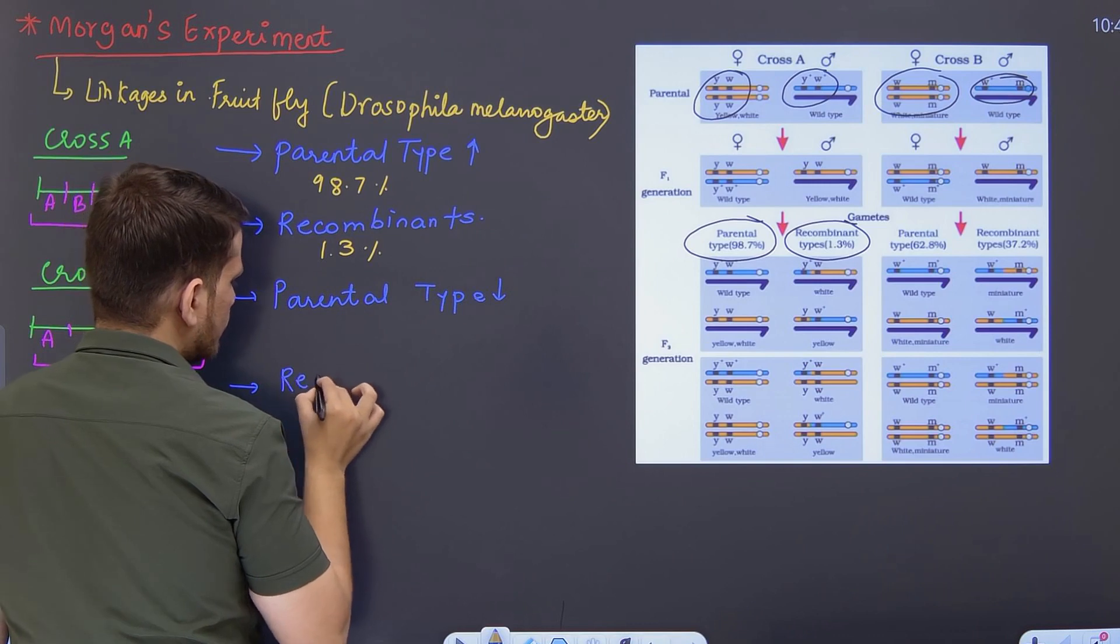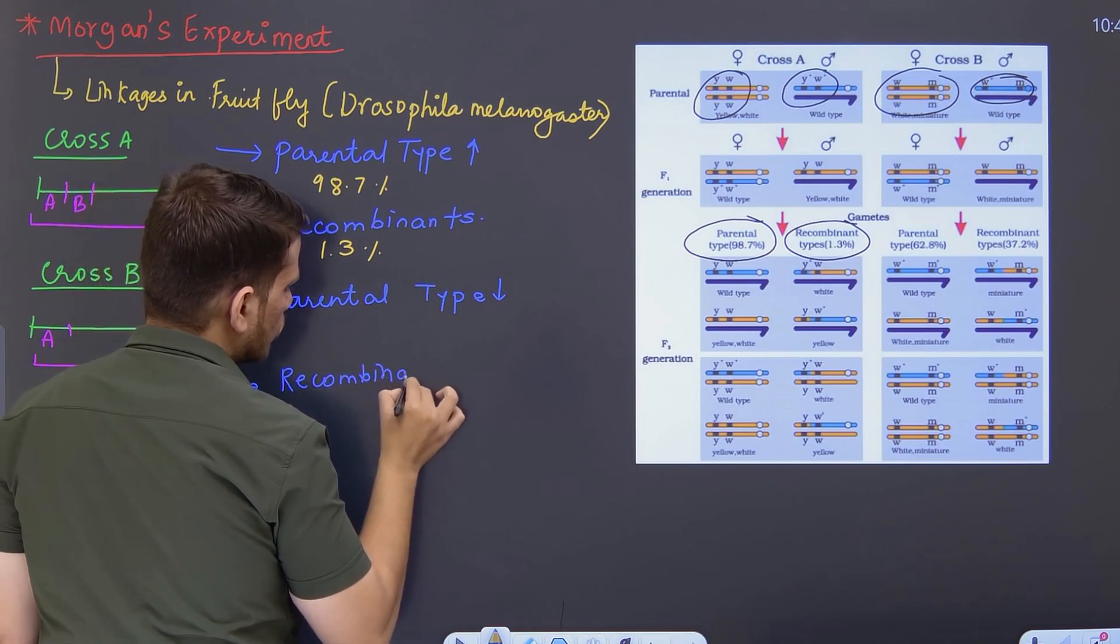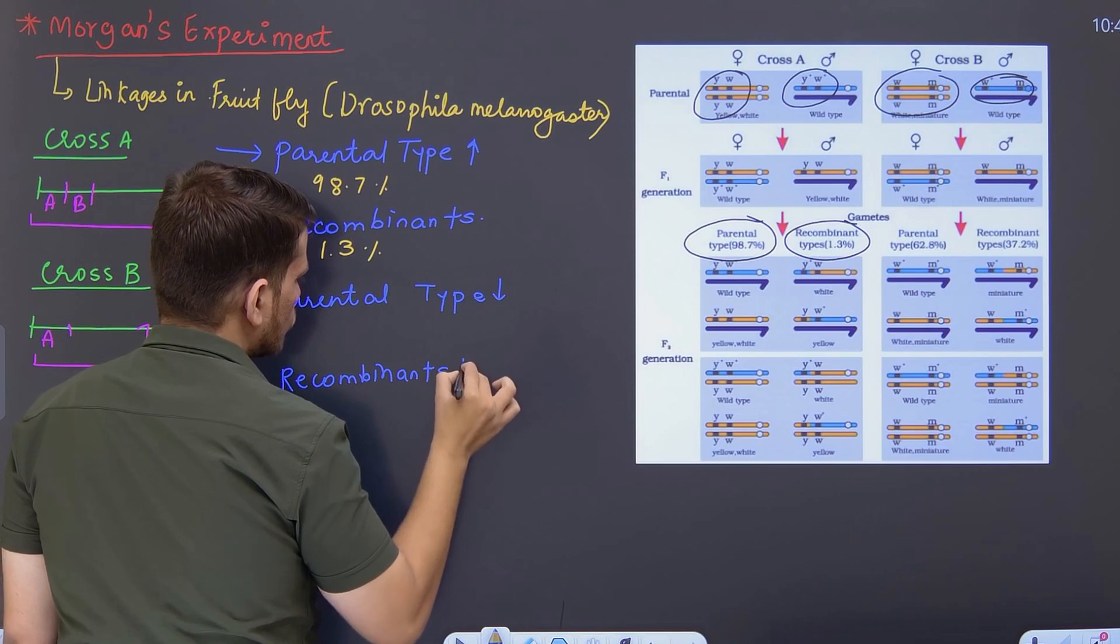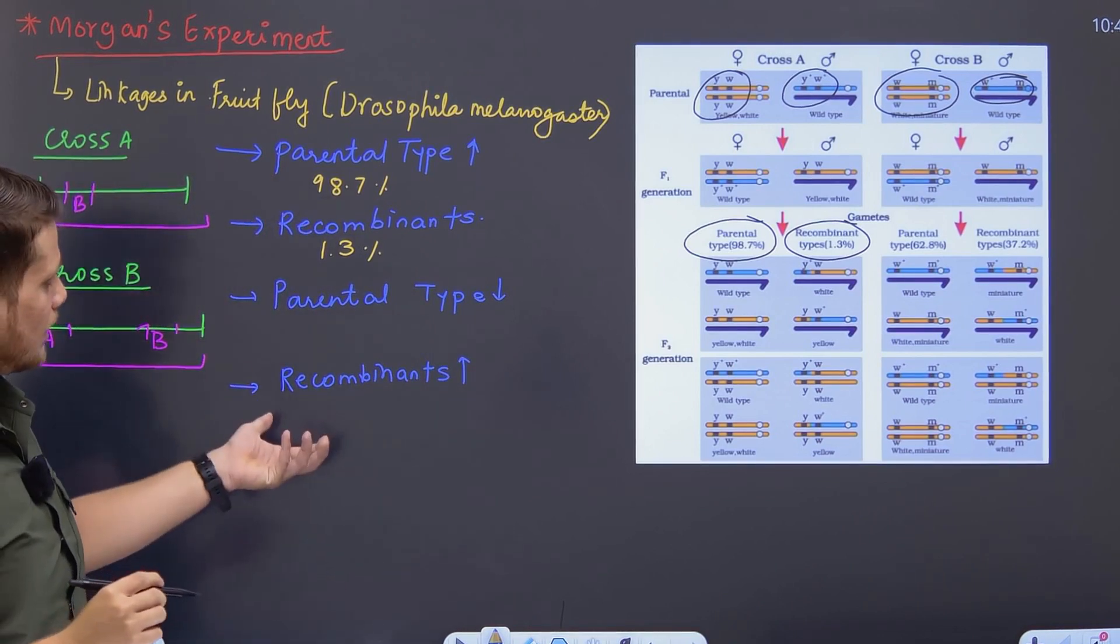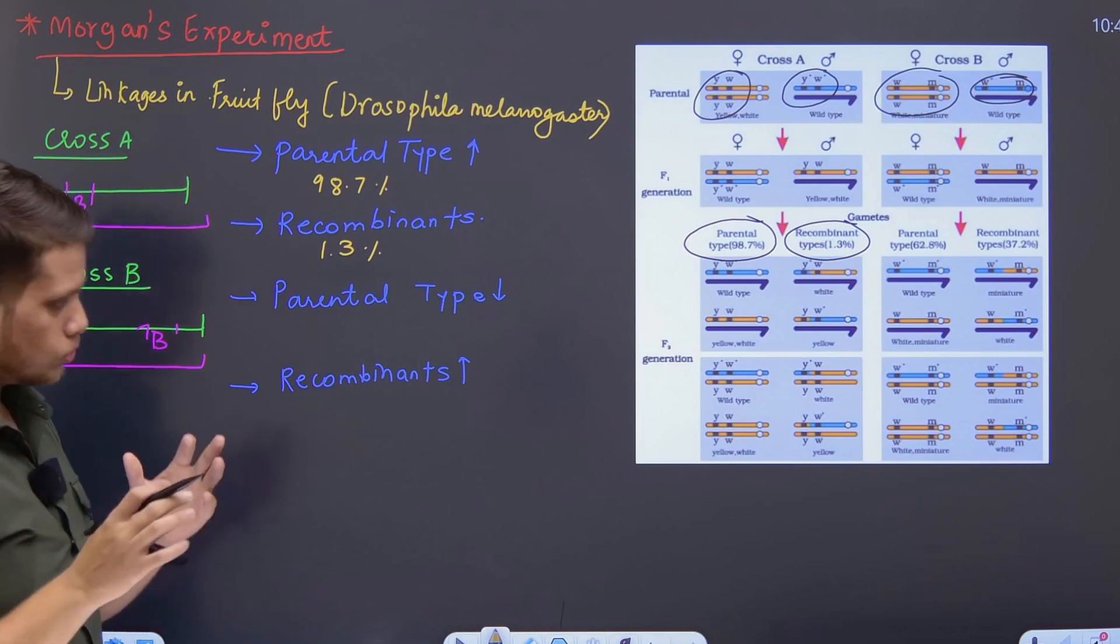Because here crossing over has happened, the recombinant percentage will be quite high. And parental combinations will be somewhat reduced.